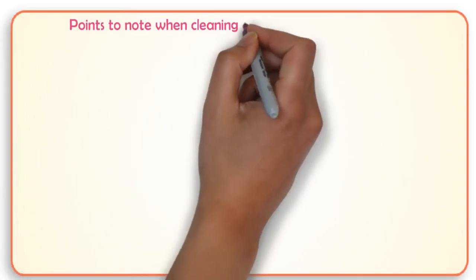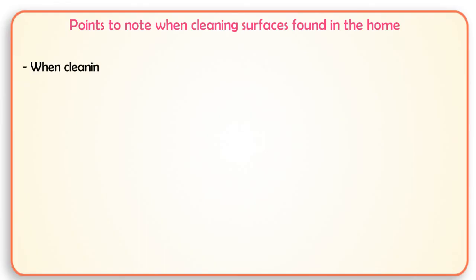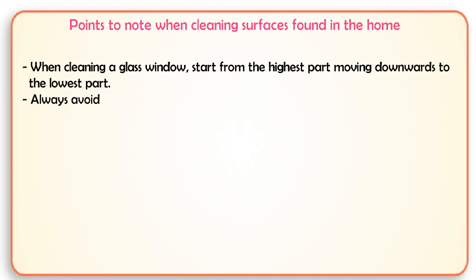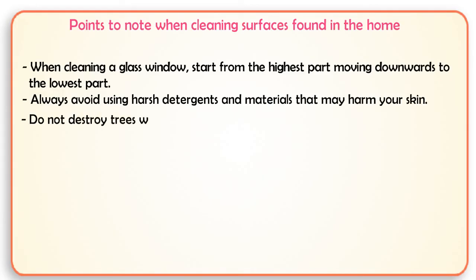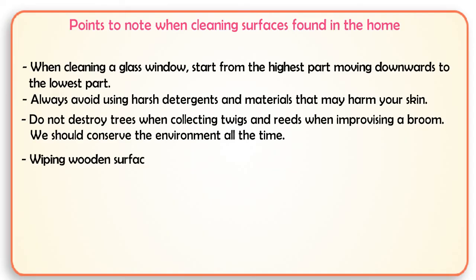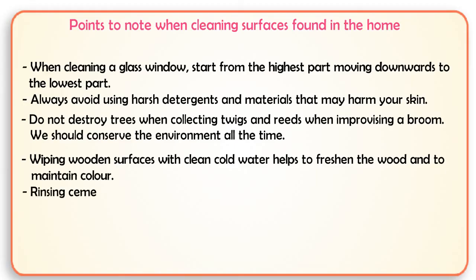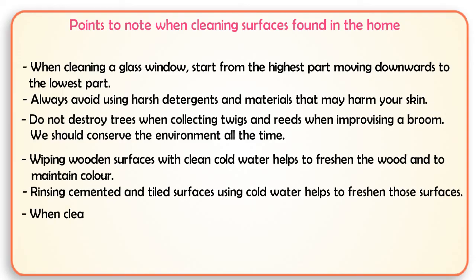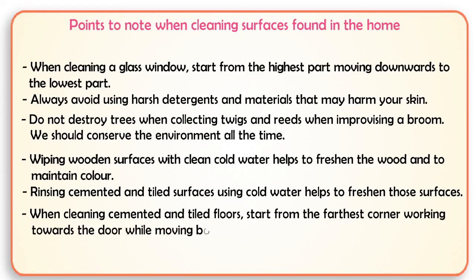Points to note when cleaning surfaces found in the home. When cleaning a glass window, start from the highest part moving downwards to the lowest part. Always avoid using harsh detergents and materials that may harm your skin. Do not destroy trees when collecting twigs and reeds when improvising a broom — we should conserve the environment at all times. Wiping wooden surfaces with clean cold water helps to freshen the wood and maintain color. Rinsing cemented and tiled surfaces using cold water helps to freshen those surfaces. When cleaning cemented and tiled floors, start from the farthest corner, walking towards the door while moving backwards.